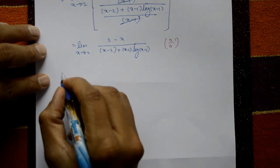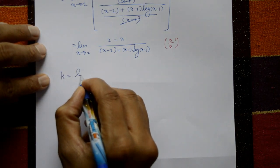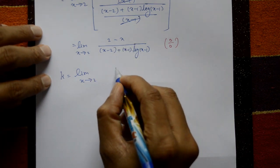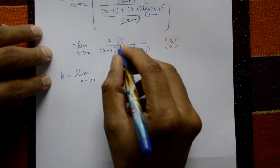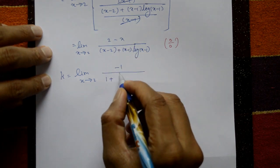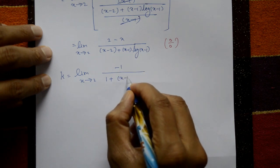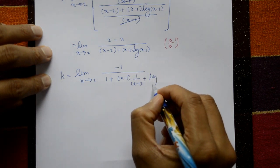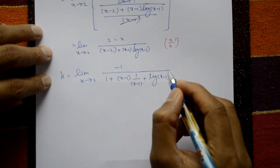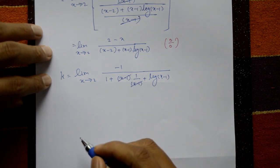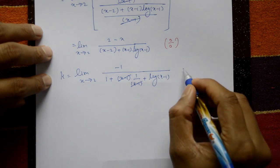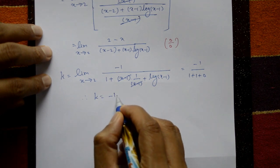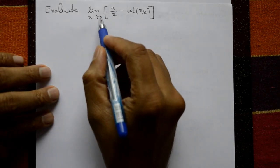Apply L'Hôpital's rule once more. Differentiating numerator: derivative of (2-x) = -1. Differentiating denominator using product rule: 1 + (x-1)·[1/(x-1)] + log(x-1) = 1 + 1 + log(x-1). Taking x = 2: numerator = -1, denominator = 1 + 1 + log(1) = 2 + 0 = 2. Therefore k = -1/2.